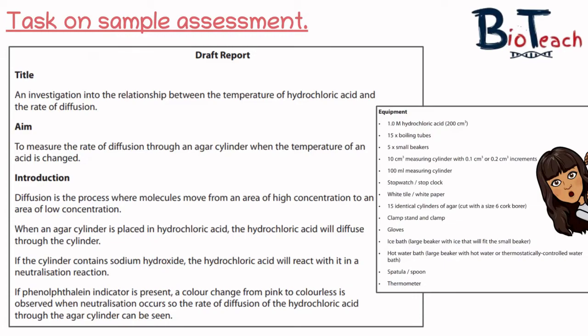The next part of the sample assessment gives you a draft report — the title of the investigation, the aim, and an introduction. This looks at diffusion: the movement of molecules from an area of high concentration to an area of low concentration. They're using an agar cylinder placed in acid, and when the acid diffuses through the cylinder it undergoes a neutralisation reaction, indicating a colour change in the agar. Pay particular attention to the aim, which is looking at how temperature of the acid affects the rate — that gives you an indication of the variables present.